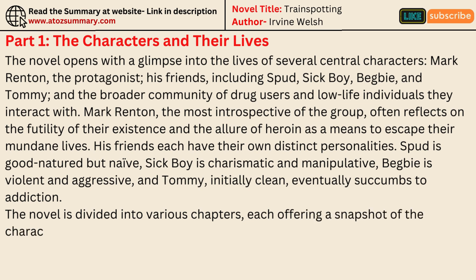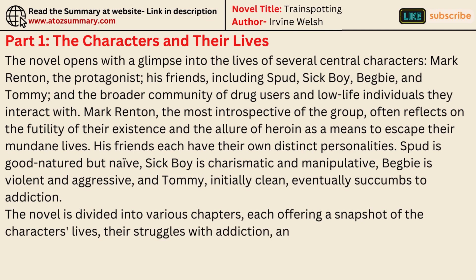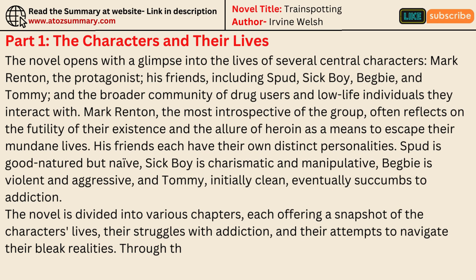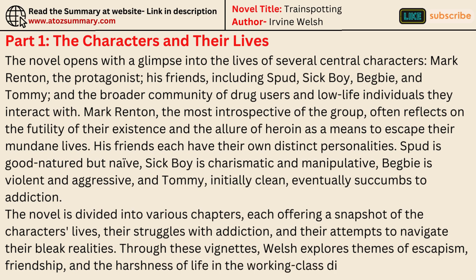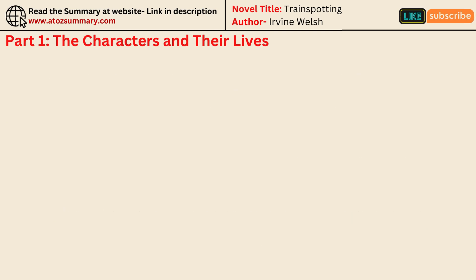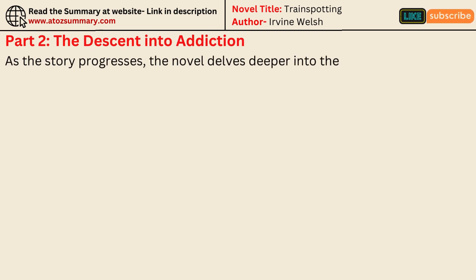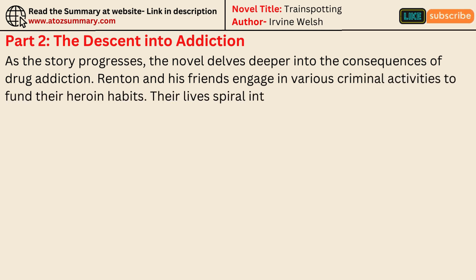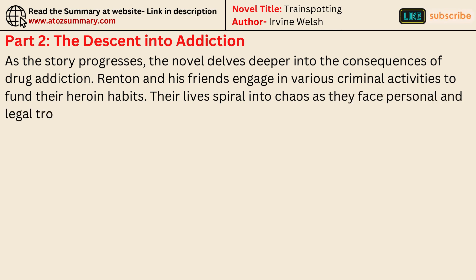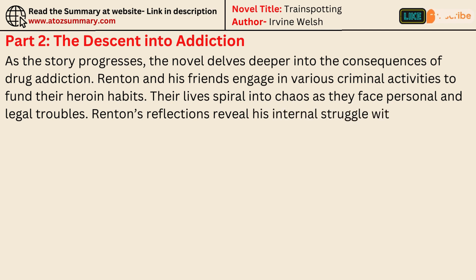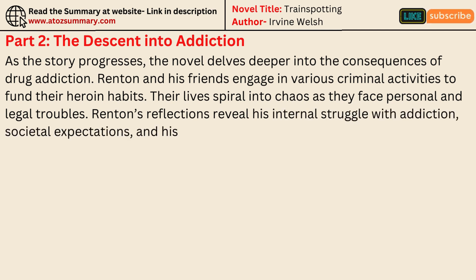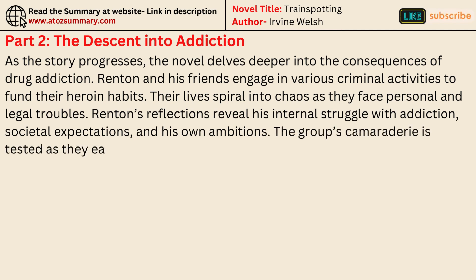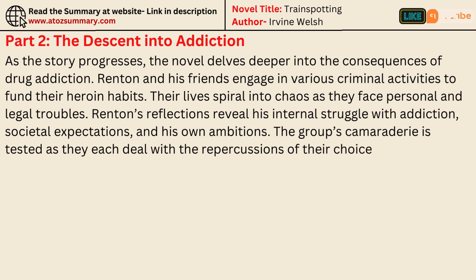The novel is divided into various chapters, each offering a snapshot of the characters' lives, their struggles with addiction, and their attempts to navigate their bleak realities. Through these vignettes, Welsh explores themes of escapism, friendship, and the harshness of life in the working-class districts of Edinburgh. As the story progresses, the novel delves deeper into the consequences of drug addiction. Renton and his friends engage in various criminal activities to fund their heroin habits, and their lives spiral into chaos as they face personal and legal troubles. Renton's reflections reveal his internal struggle with addiction, societal expectations, and his own ambitions. The group's camaraderie is tested as they each deal with the repercussions of their choices.